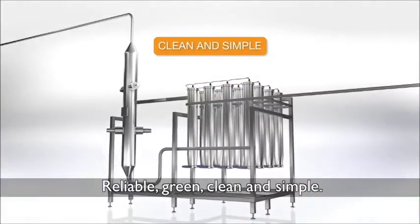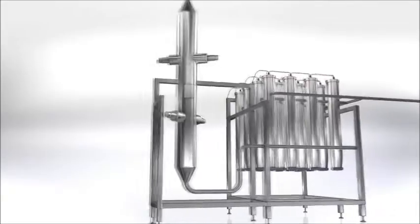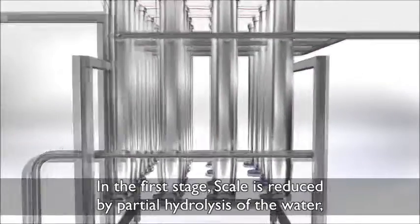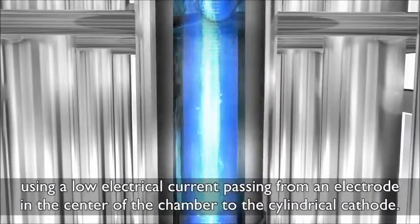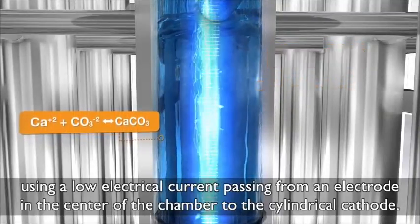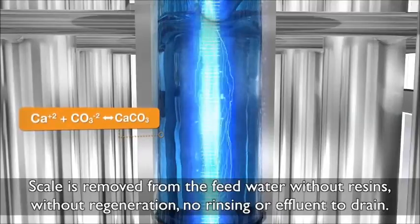Reliable, green, clean, and simple. In the first stage, scale is reduced by partial hydrolysis of the water using a low electrical current passing from an electrode in the center of the chamber to the cylindrical cathode. Scale is removed from the feed water.